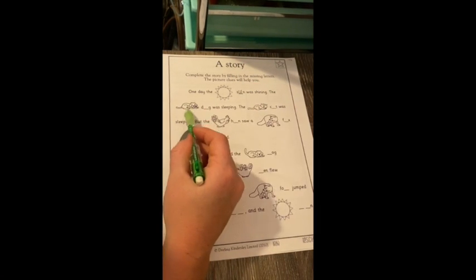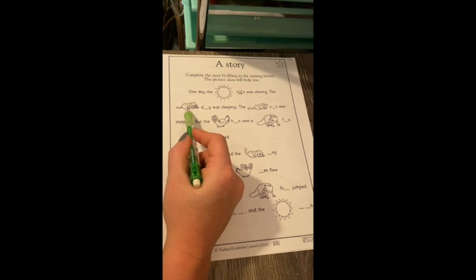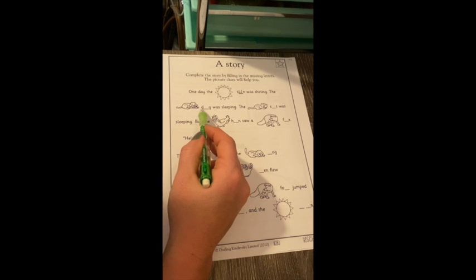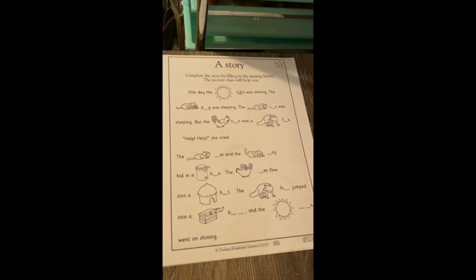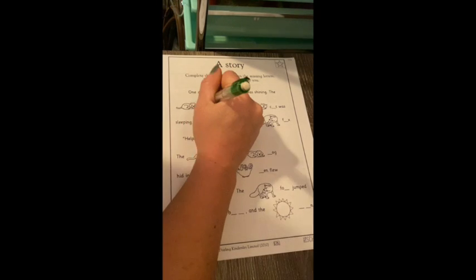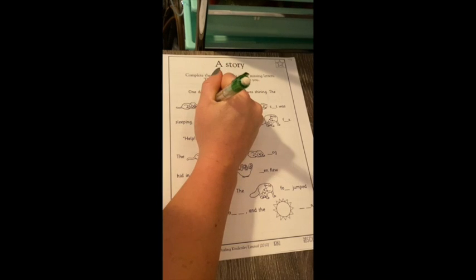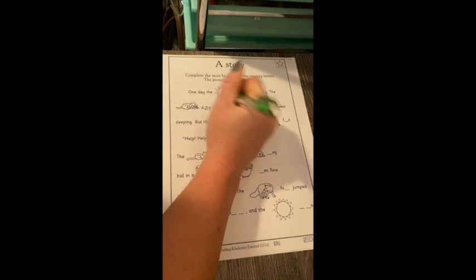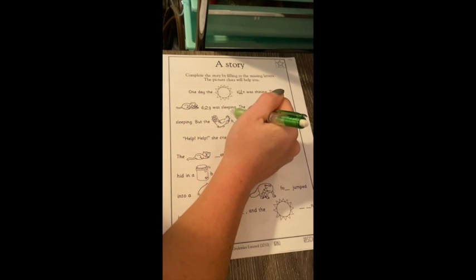The — what do you think this is a picture of? A dog. So what letter is missing? Like an octopus — O. D-O-G, dog, was sleeping.